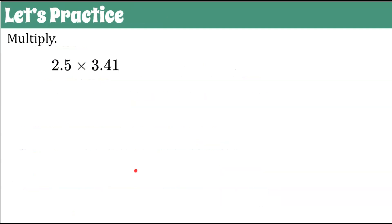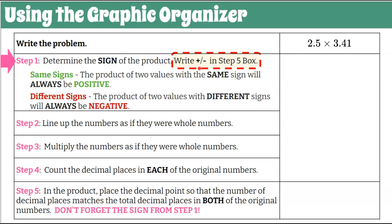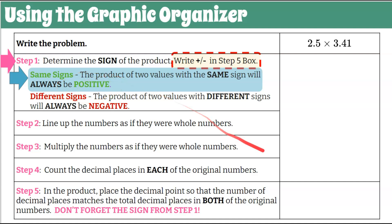Here's our first problem. We're going to multiply 2.5, or 2 and 5 tenths, multiplied by 3 and 41 hundredths. We're going to do step one — determine the sign of the product — writing positive or negative in our step five box so we don't forget. We're looking at our values: they have the same sign, both positive. So by the same signs rule, they're always going to be positive. We're going to put a positive sign in that last box so we remember our final answer is positive.